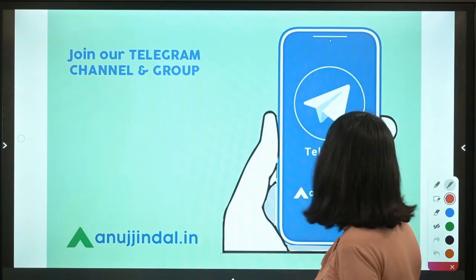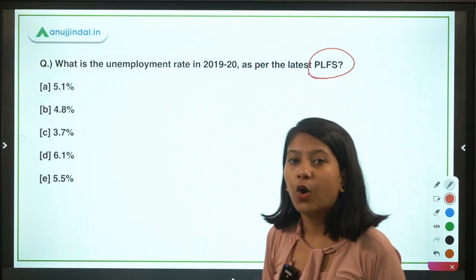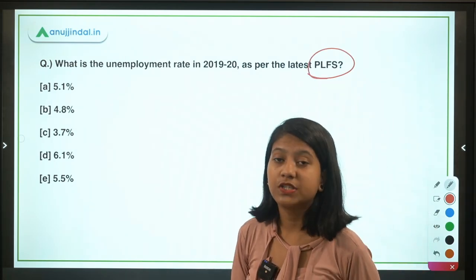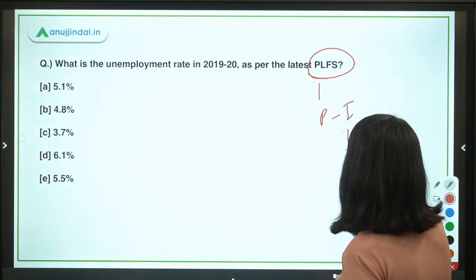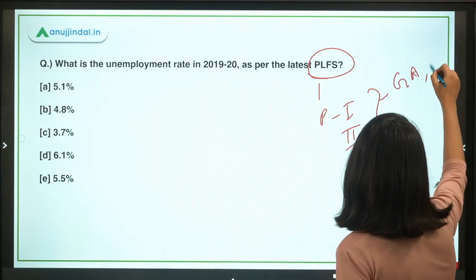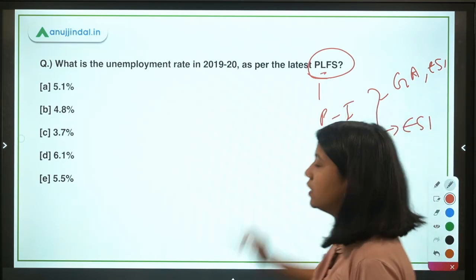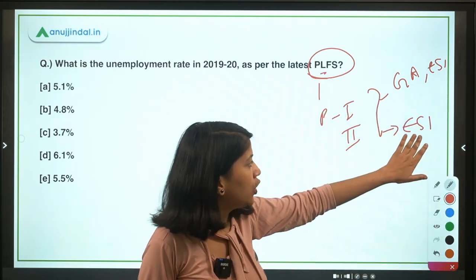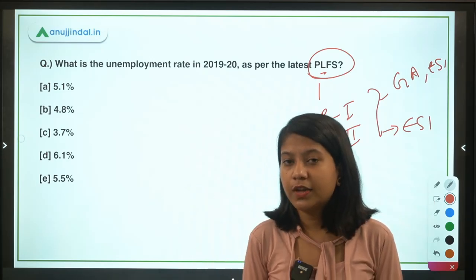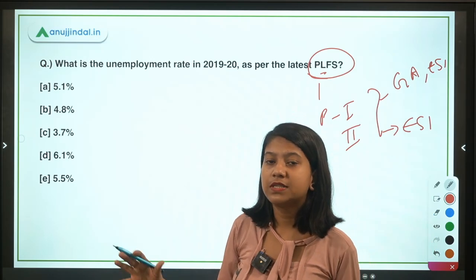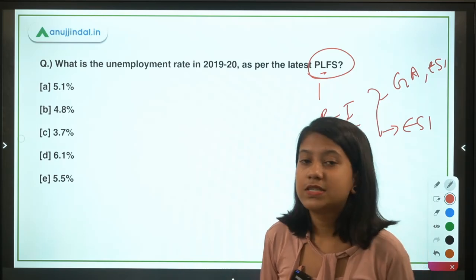The very first question is related to the Periodic Labour Force Survey, which is very relevant for both phase one and phase two. In phase one it may appear under general awareness, and in ESI it can also be asked. In phase two you can be asked about PLFS particularly in ESI. So we need to be very attentive during the entire PLFS discussion.